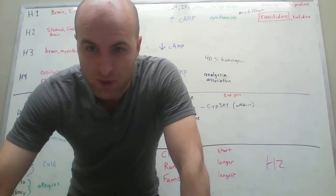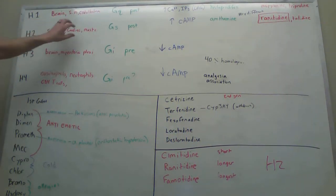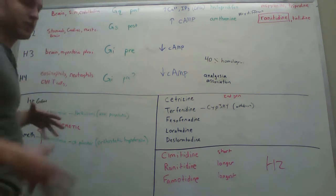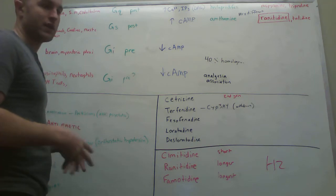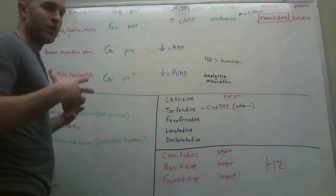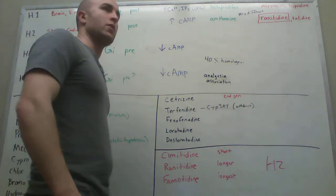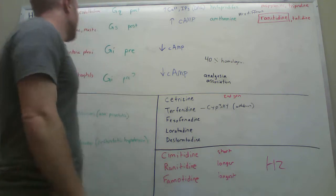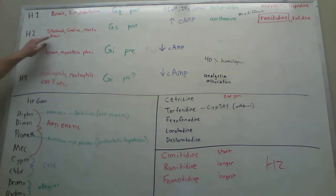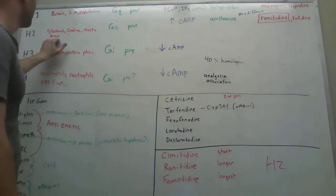Now for the H2. These ones are different. What these guys do is when they are bound with histamine, they are going to cause your gastric, parietal cells to secrete more acid. The stomach, cardiac myocytes, mast cells, and brain have receptors for H2.